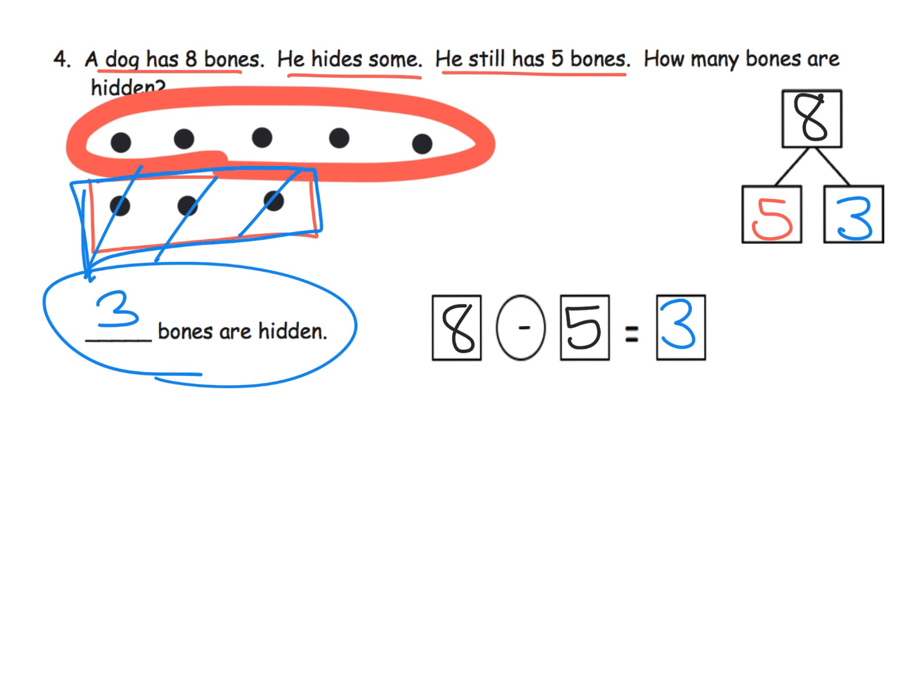And once again, I'm just going to kind of belabor the point a little bit. Explicitly, the number sentence would be 8 minus blank equals 5. That's the subtraction with the change unknown. But we're not going to write it that way. We want our students to write it as 8 minus 5 equals the box.